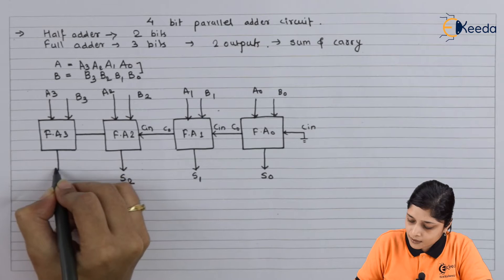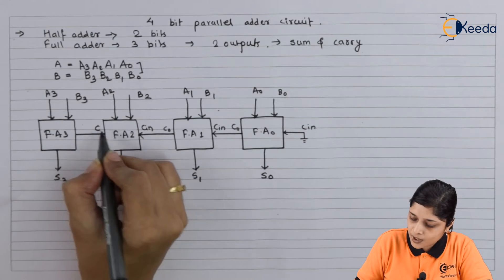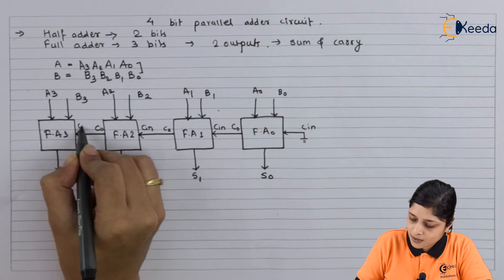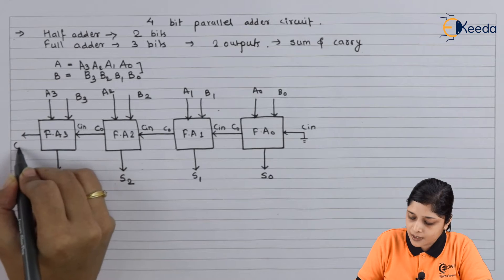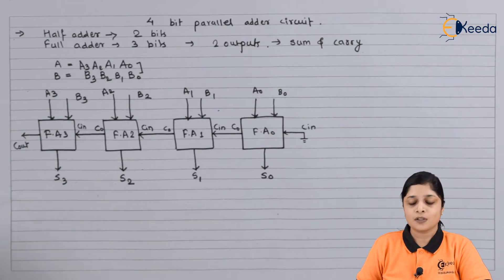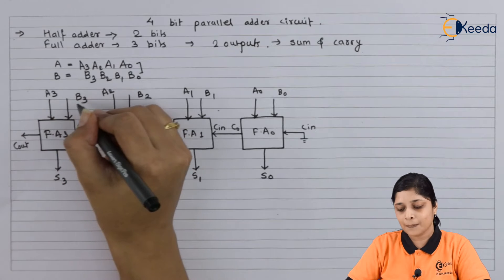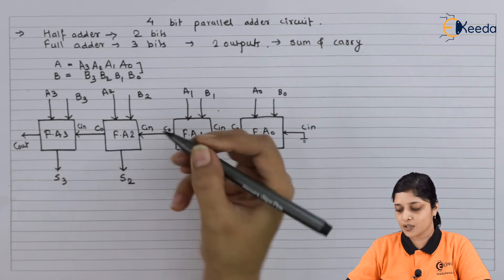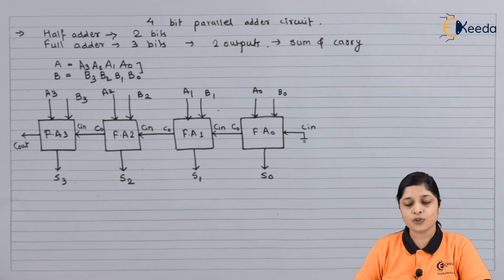And here output is S3. So here C_out becomes here C_in, and finally we are getting here C_out. So sum and carry are the outputs. C_in, A3, B3 are the inputs. Here also C_in, A2, B2 are the inputs.